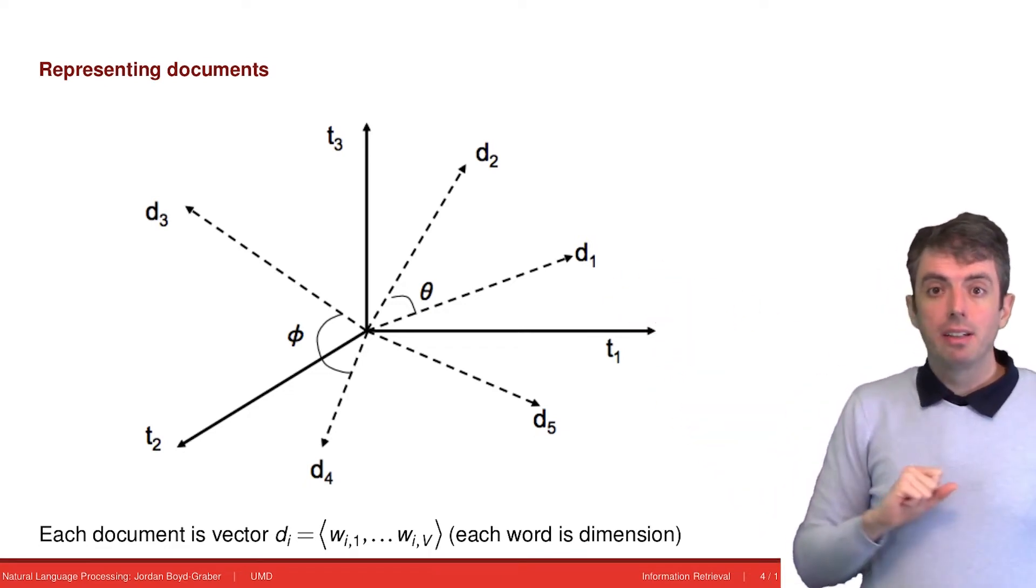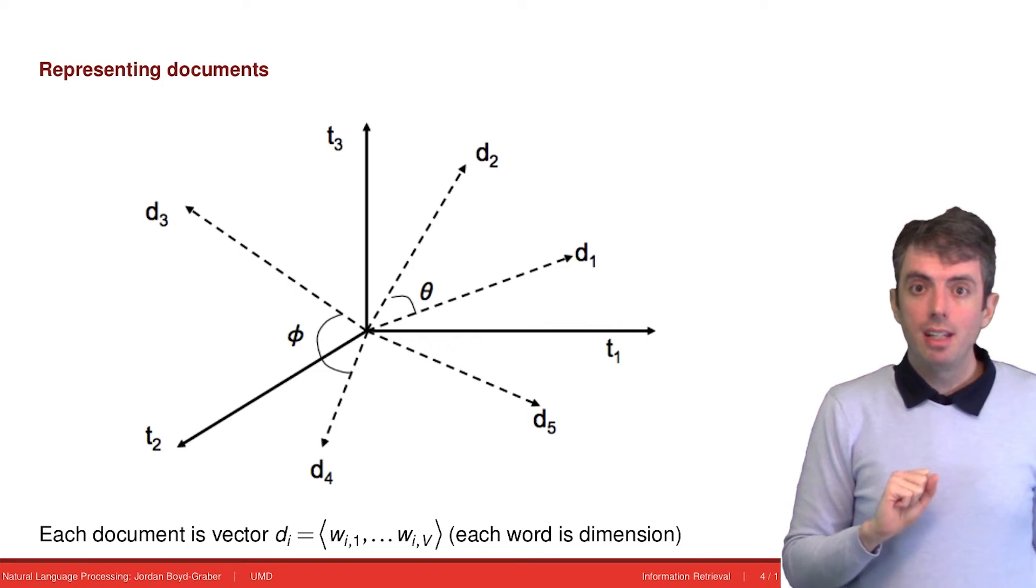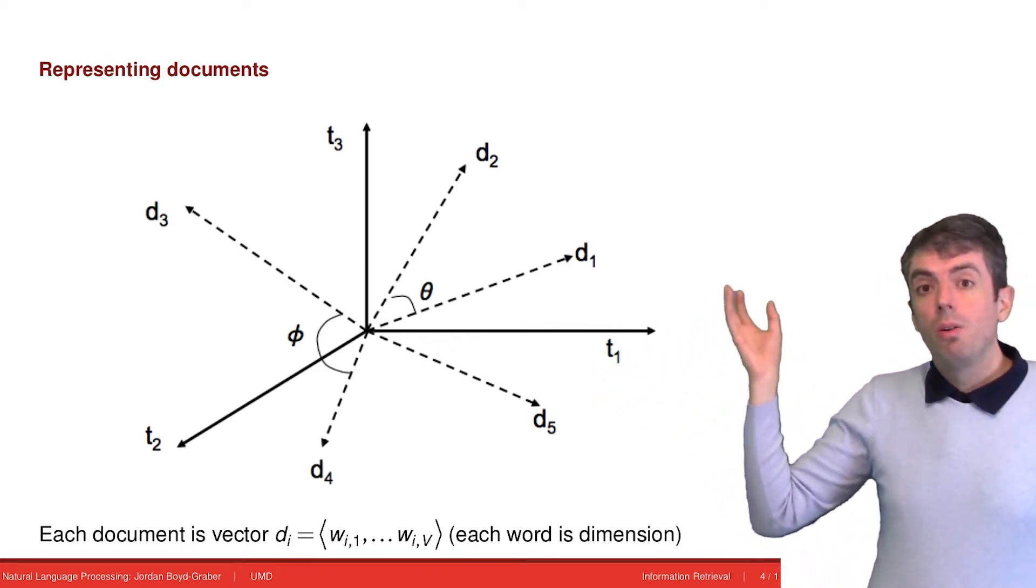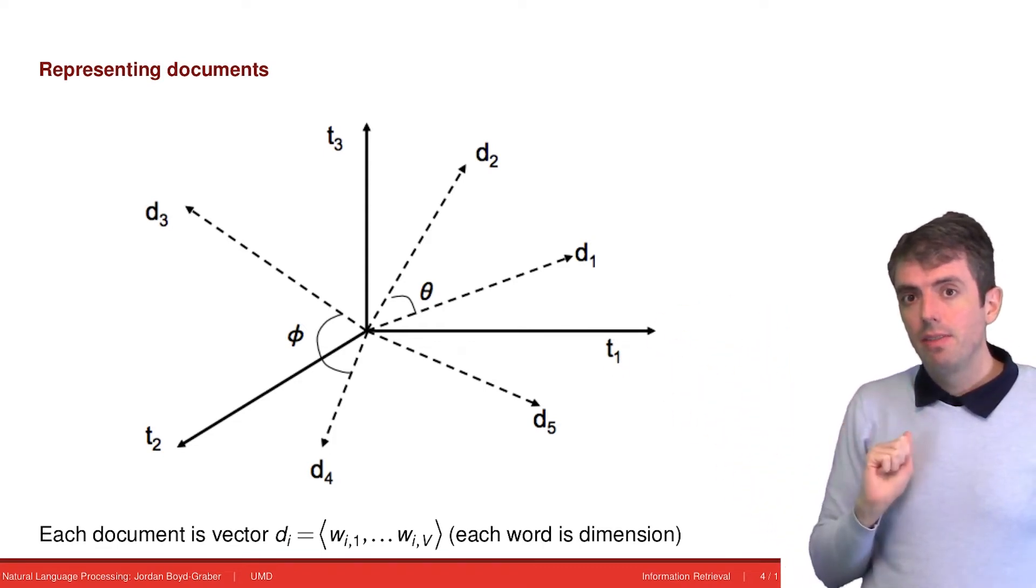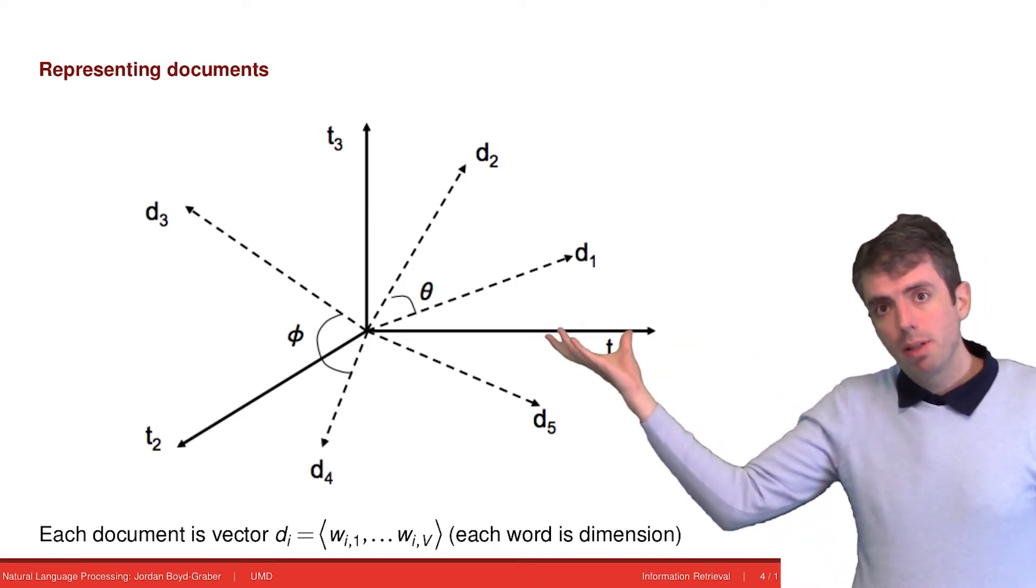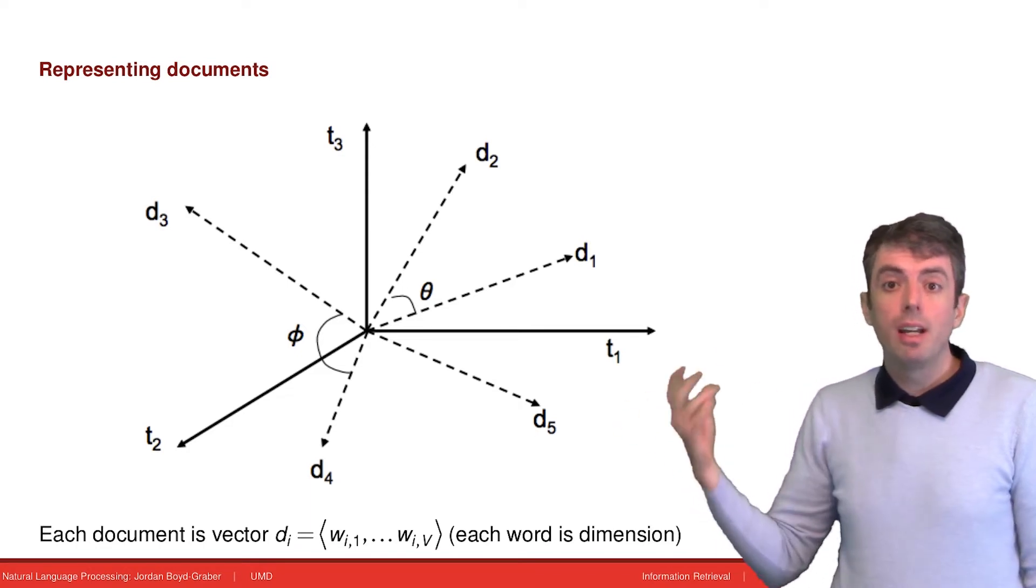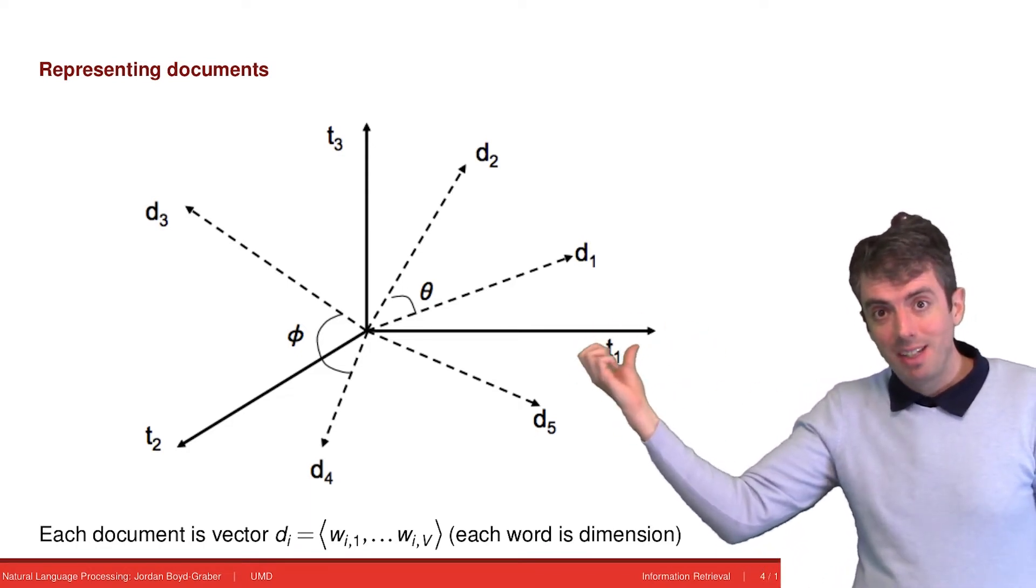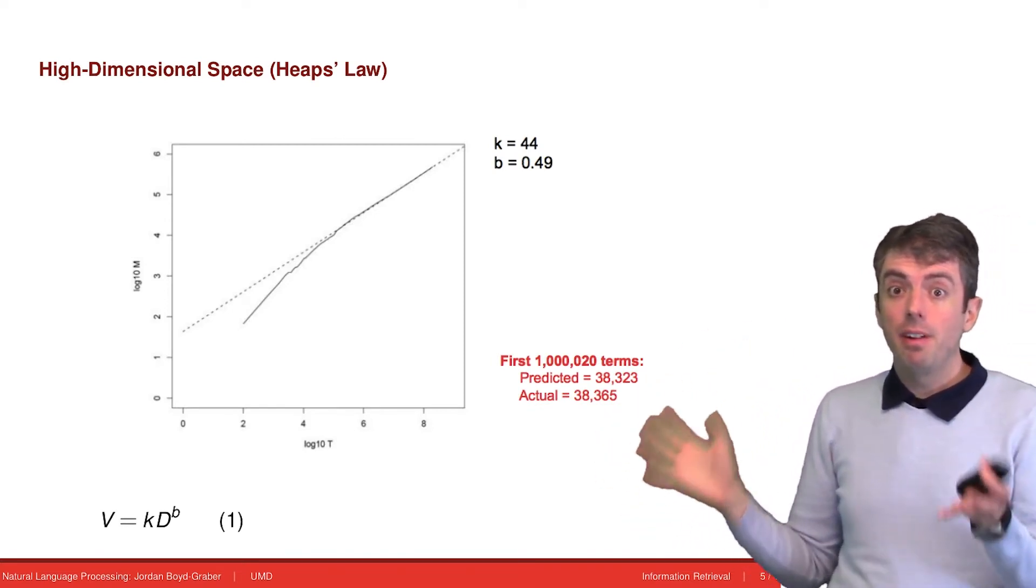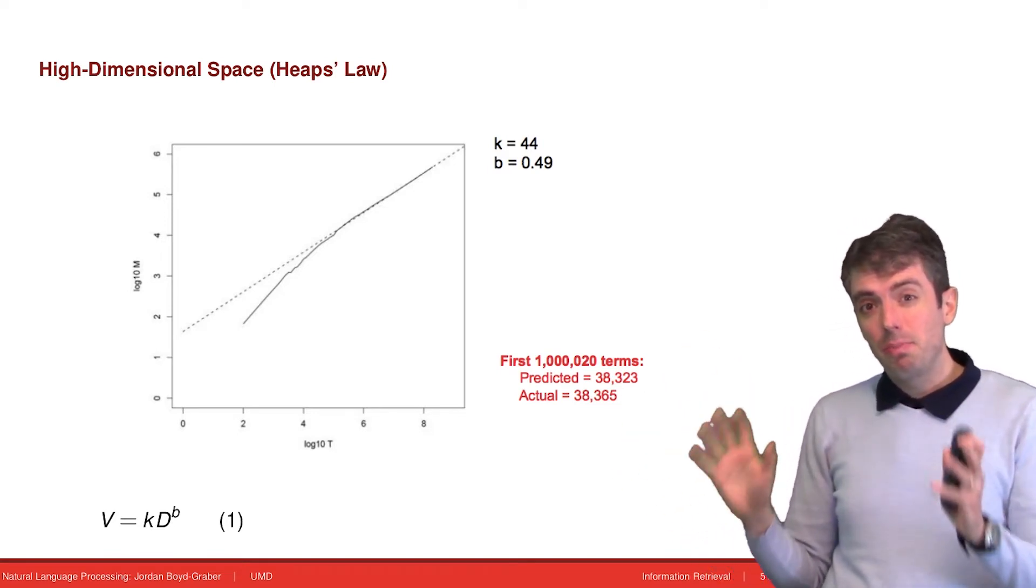So this is how we'll compare the similarity of documents in this vector-based representation. The details that I haven't told you yet are how do we compute the values for each of the dimensions, and recall that each dimension corresponds to a word, and how do we compute this angle between two vector representations of a document or a vector representation of a query. Before we answer those questions, I just want to say up front that this is going to be a very high-dimensional space.